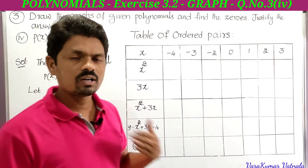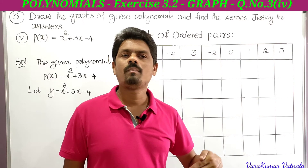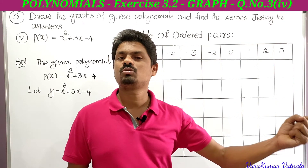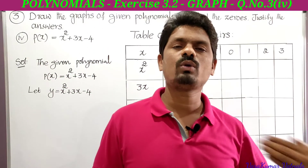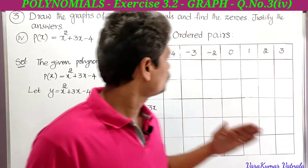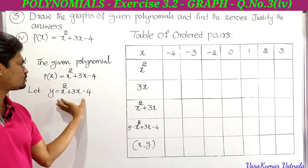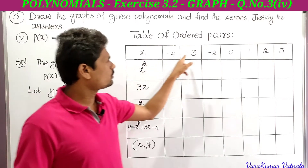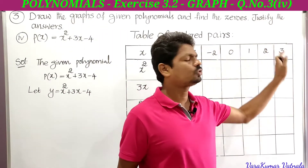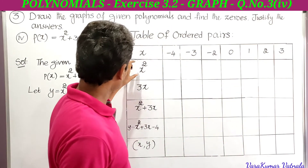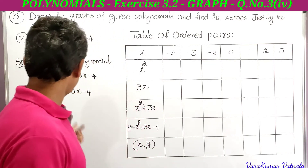To find the ordered pairs, we take x values of our own. For the corresponding x values, by substituting in the equation y = x² + 3x − 4, we find the y values. This is the table of ordered pairs. Let y = x² + 3x − 4. We take these x values: −4, −3, −2, 0, 1, 2, 3. For these x values we have to find the y values.